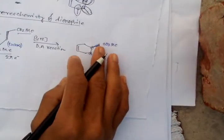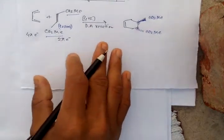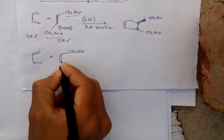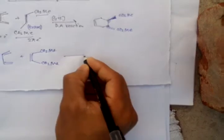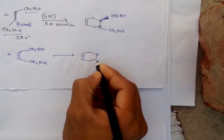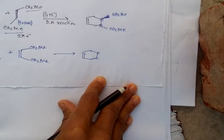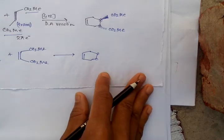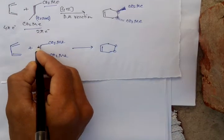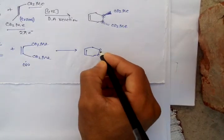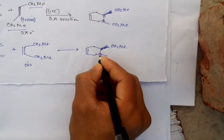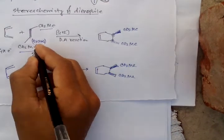Suppose this dienophile is cis — CO₂Me here and CO₂Me here in a cis arrangement. And what we get: here it is a double bond, and here and here will be CO₂Me groups. If the dienophile is a cis conformer, then the product will be cis. The product stereoselectivity will be cis. If it is trans then the product will be trans.